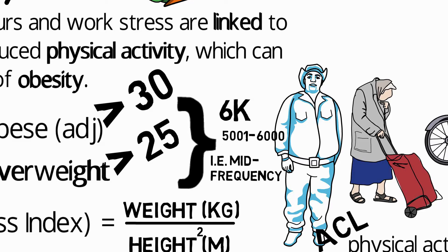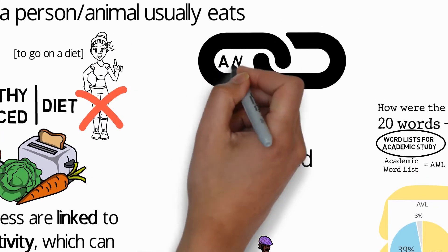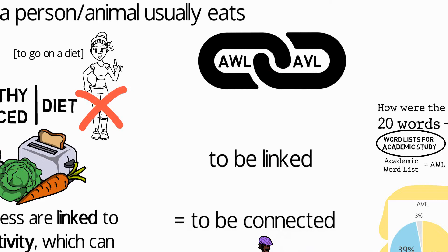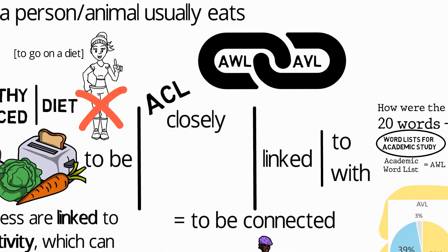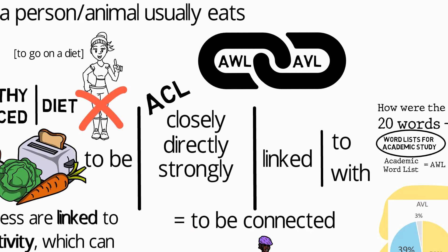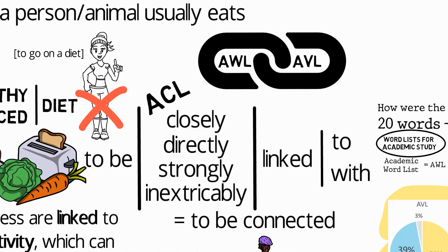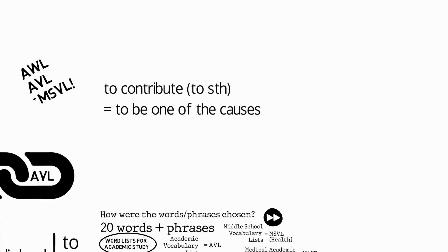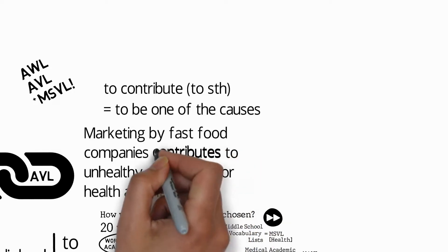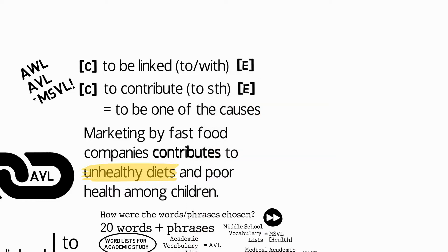The final word in that sentence is 'linked,' which is in the Academic Word List and the Academic Vocabulary List. To be linked means to be connected, and it's usually followed by 'to,' sometimes 'with.' Good collocations from the ACL include: to be closely linked, directly linked, strongly linked, and inextricably linked. A similar word also in those lists is 'contribute to,' meaning to be one of the causes — for example, 'marketing by fast food companies contributes to unhealthy diets and poor health among children.' With both these phrases, the cause comes first and the effect comes second.